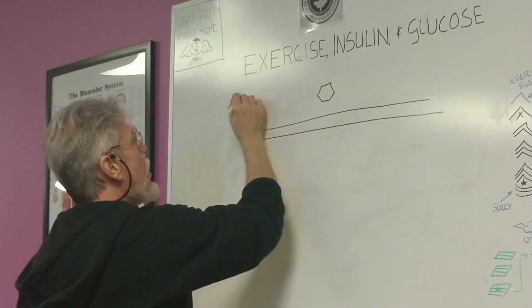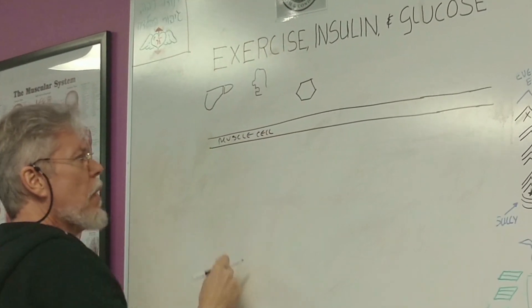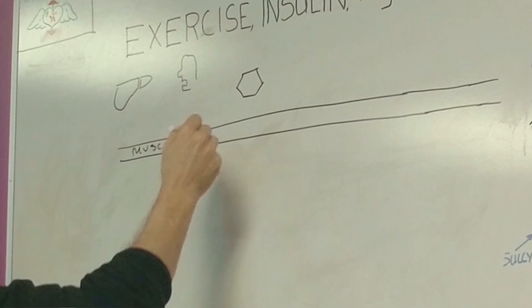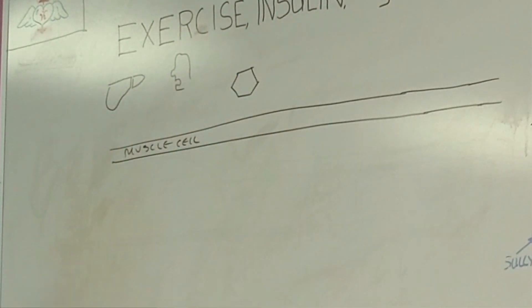So we have a muscle cell membrane. This is outside the muscle cell, this is inside the muscle cell. During exercise, we need glucose. Here's glucose. Where does it come from?